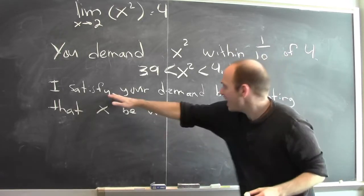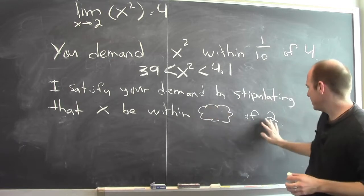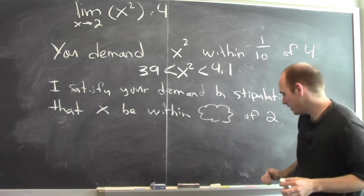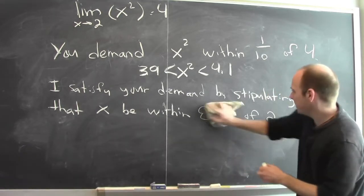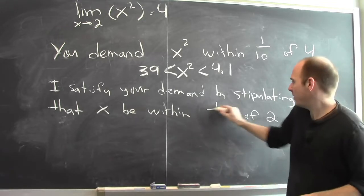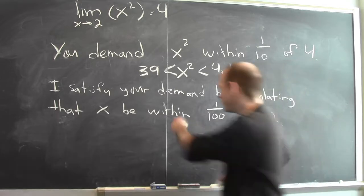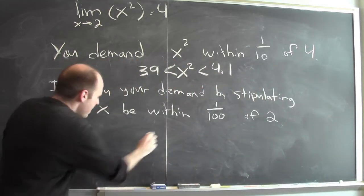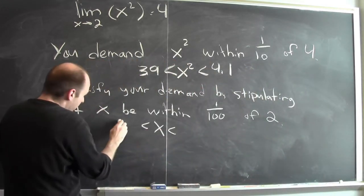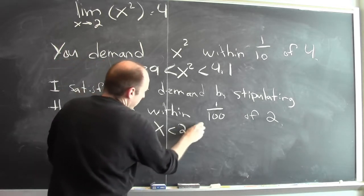I have to satisfy your demand by making x sufficiently close to 2. I'm going to satisfy your demand by stipulating that x be within some small distance of 2. So how close is sufficiently close? Let's make x be within a hundredth of 2 and see what happens. If x is within a hundredth of 2, that means that x is bigger than 1.99 and smaller than 2.01.